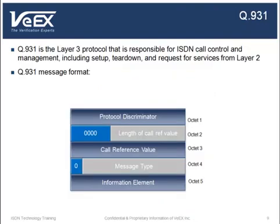Using the D-channel, the TE and the NT exchange messages to control the call functions of the ISDN circuit, including setup, teardown, and request for services from layer 2. Q931 signaling is a common channel signaling service. The details of the message fields shown in this chart will be provided next.